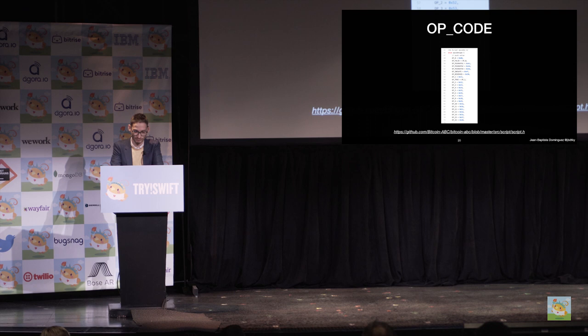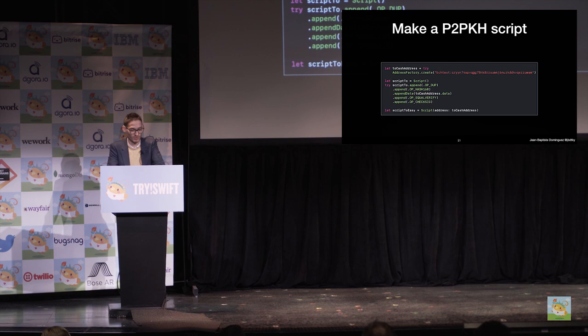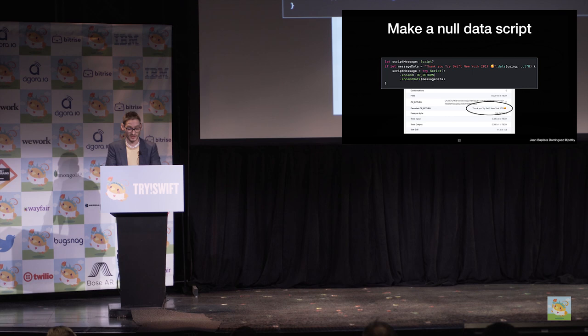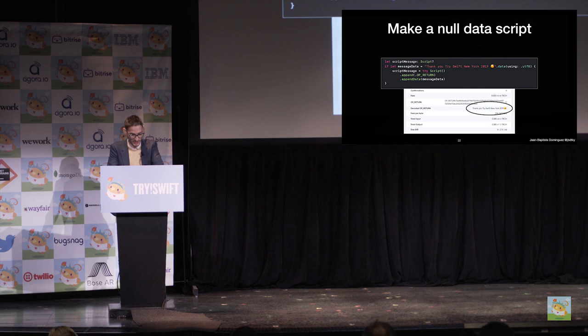Here is how to make a P2PK transaction with BitcoinKit. There is a method with an address as parameter, as you can see, so it will generate the script for you. All the basic smart contracts are already implemented in BitcoinKit. Here is an example of an OP_RETURN script. The opcode OP_RETURN will make your output invalid directly — unspendable — and then you can add your metadata. I wrote the string 'thank you TrySwiftNewYork2019' for example, which you can see in the Block Explorer. This message will stay forever in the blockchain. If you would like to write a new protocol using metadata, I invite you to read the spec where I describe some best practices with OP_RETURN.